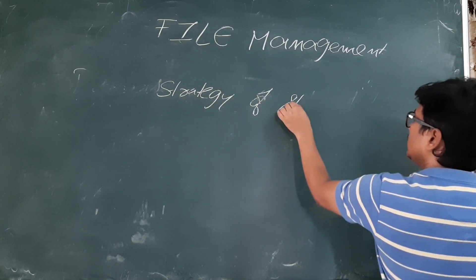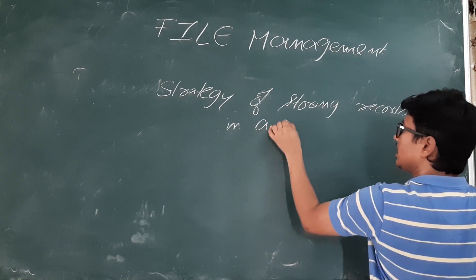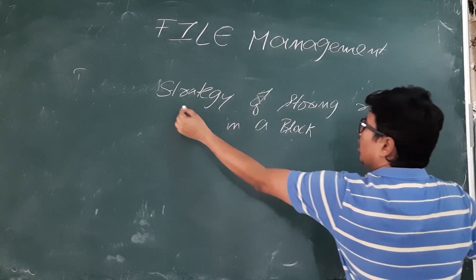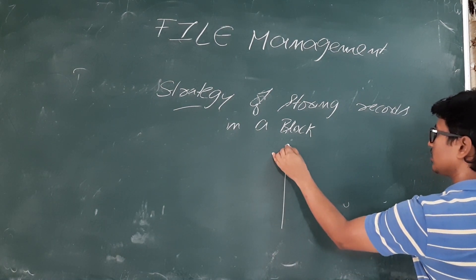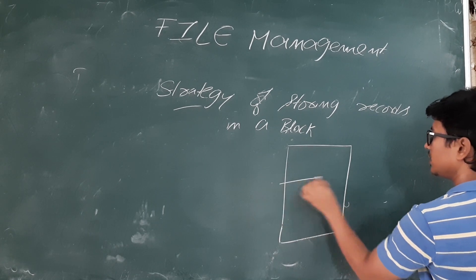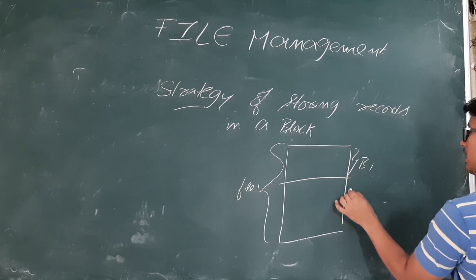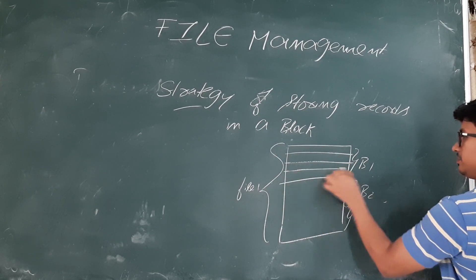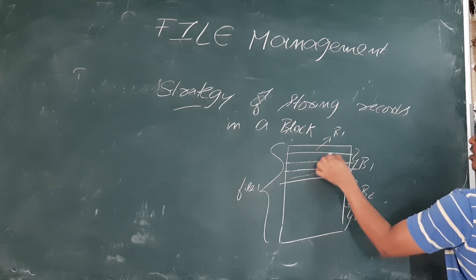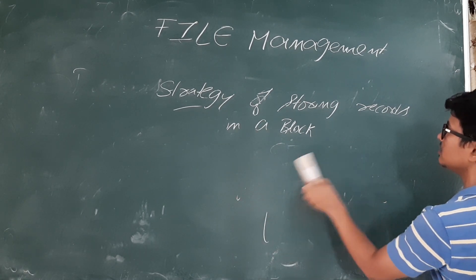Now we will discuss the strategy for storing the records in a block, because a block consists of a collection of records. A file is a collection of records, so we have a file which will be divided into blocks — block one, block two, block three, and so on. In each block we will have a set of records: record one, record two, and so on.